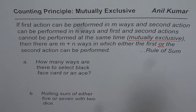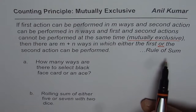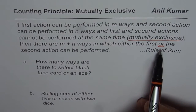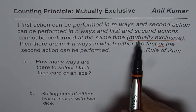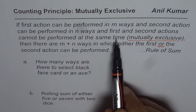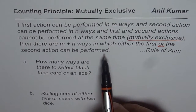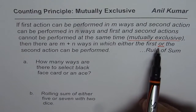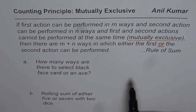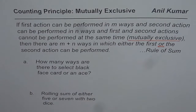In this principle of counting, we are looking for two things: one, that the events are mutually exclusive — that is, they are not performed at the same time — and two, that there are 'or' operations being performed. Let me give you two examples to make it absolutely clear.